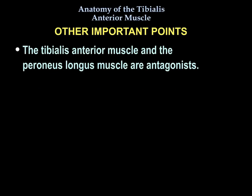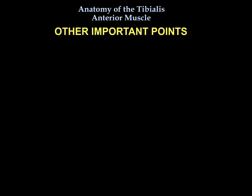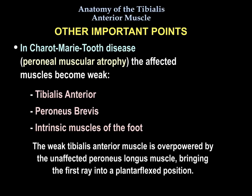The tibialis anterior muscle and the peroneus longus muscle are antagonists. In Charcot-Marie-Tooth disease — peroneal muscular atrophy — the affected muscles that become weak include the tibialis anterior, the peroneus brevis, and the intrinsic muscles of the foot. The weak tibialis anterior is overpowered by the unaffected peroneus longus muscle, bringing the first ray into a plantarflexed position.